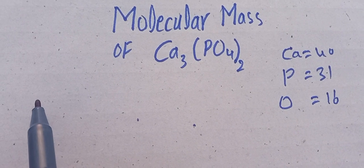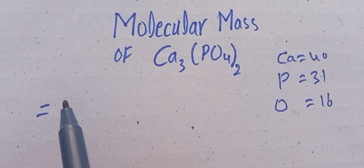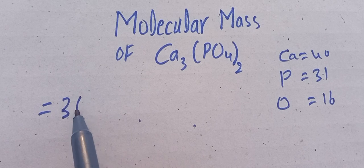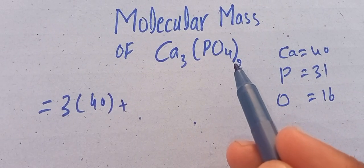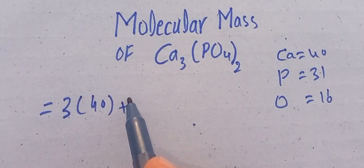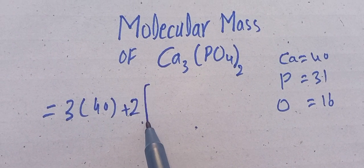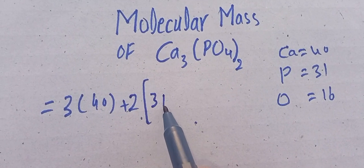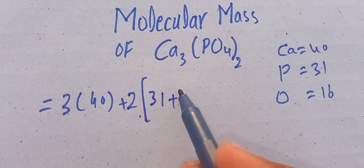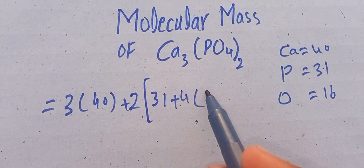As we know, three atoms of calcium are present here, and the atomic mass of calcium is 40 grams per mole, plus two moles of phosphate which comes in front of the big bracket. Atomic mass of phosphorus is 31, plus four atoms of oxygen with atomic mass of 16.